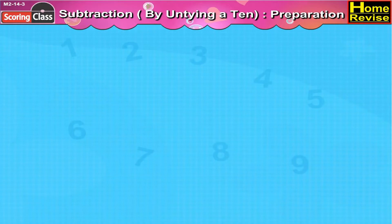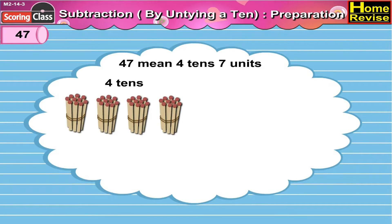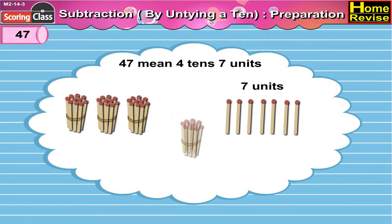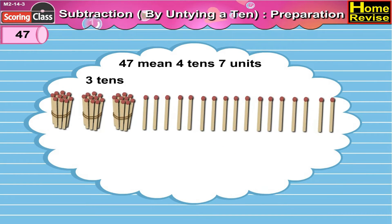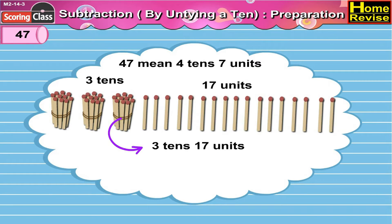Forty-seven means four tens, seven units. If we untie one ten, we'll get ten units. So now we have three tens, seventeen units. Which means four tens, seven units is equal to three tens, seventeen units.